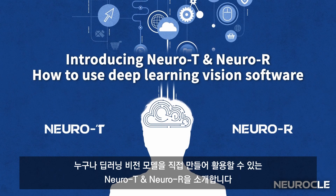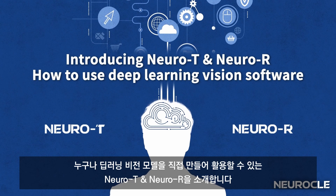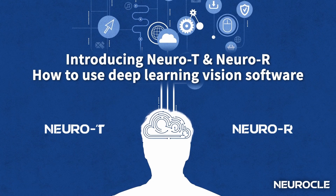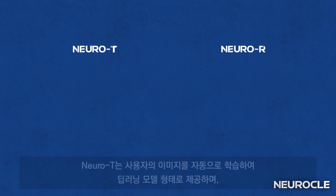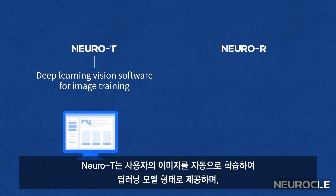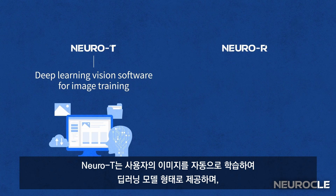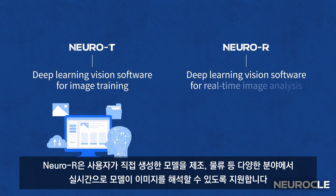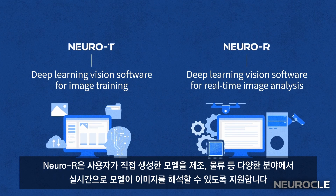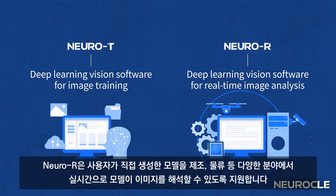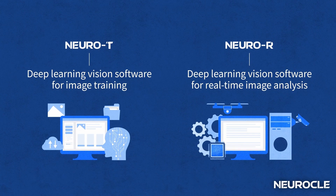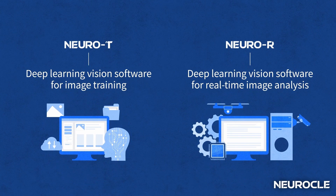NeuroT and NeuroR — anyone can create and utilize deep learning vision models with these tools. NeuroT automatically trains users' images and builds them a deep learning model. NeuroR enables users to run real-time image analysis across a variety of areas, including manufacturing, logistics, and medical field, with models customized by users themselves.